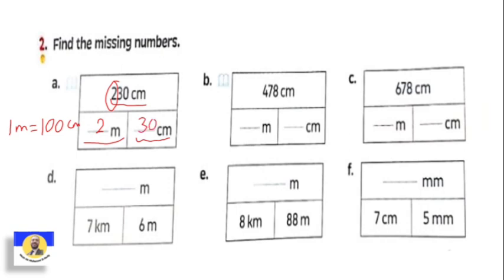Again: meter takes the digit standing in the hundreds place. So here the four in the hundreds place goes to meter, and the remainder seventy-eight stays in centimeters. And if there's a digit in the thousands place, it also goes to meter — meter takes from the hundreds place and any digits to the left. So the answer: six meters and seventy-eight centimeters.